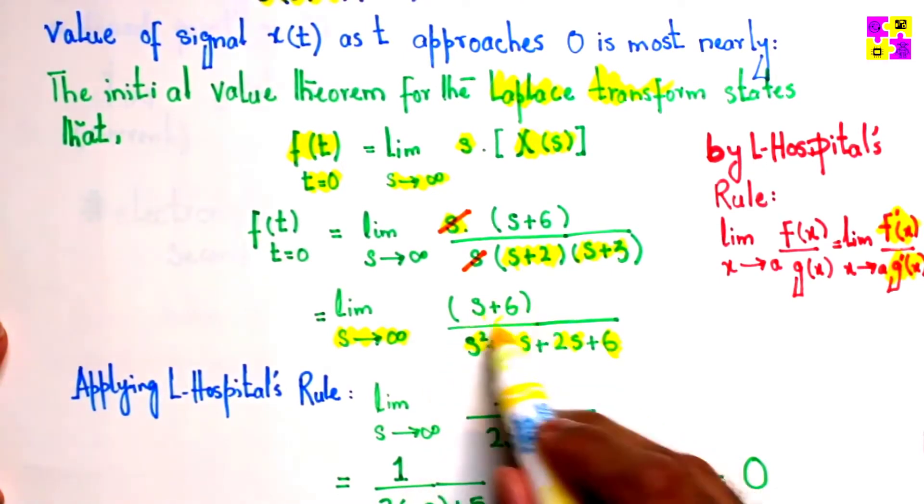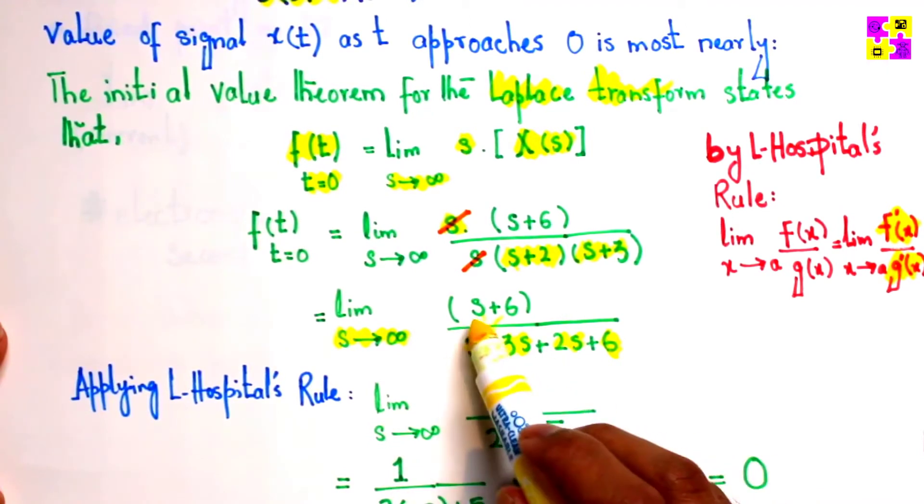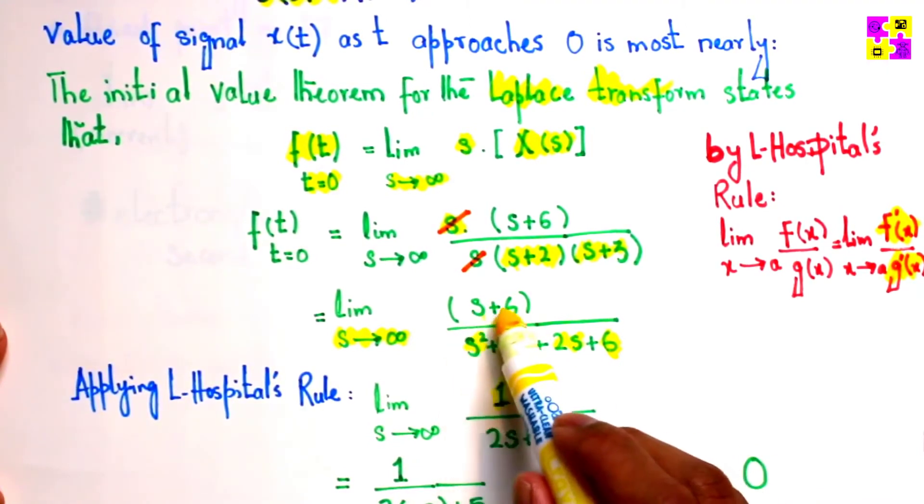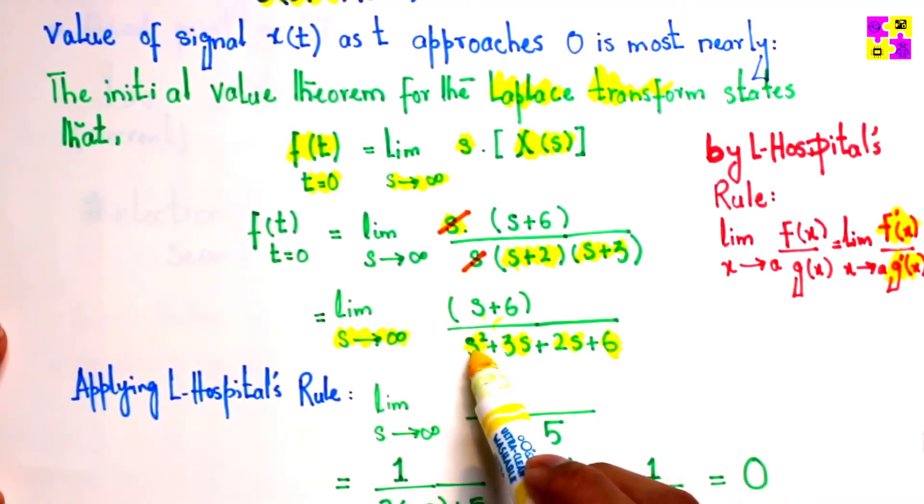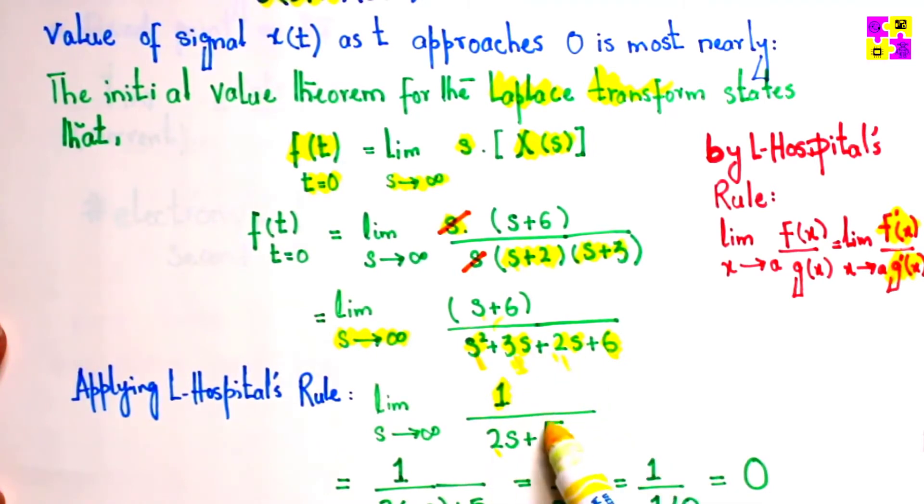If we take a derivative over here, s plus 6 will simply be equivalent to 1, right? We are differentiating it with respect to s. So 1 plus 0, that becomes 1. For the denominator: s squared plus 2s plus 3s plus 6 gives us 2s plus 5. So I got 1 over 2s plus 5.